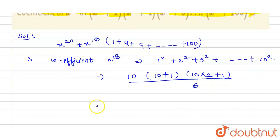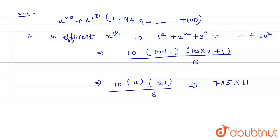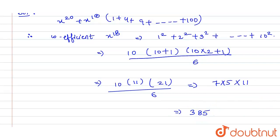So it will be equals to 10 into 11 into 20 plus 1 that is 21 divided by 6. And simplifying it, we will get the answer as 7 into 5 into 11. So, that will be equals to 385.